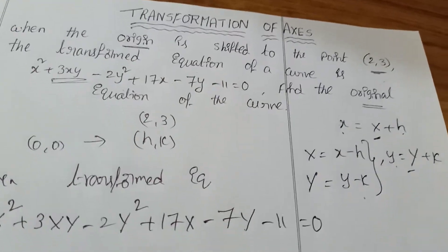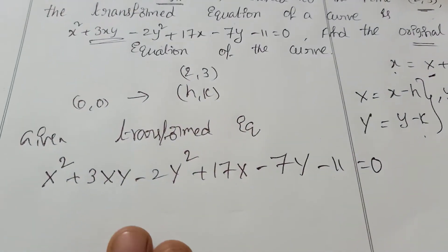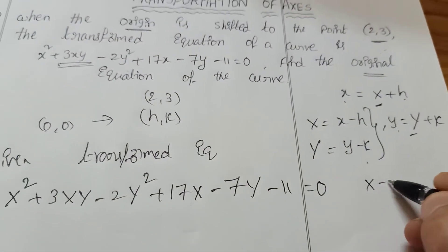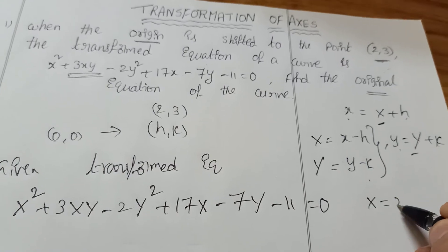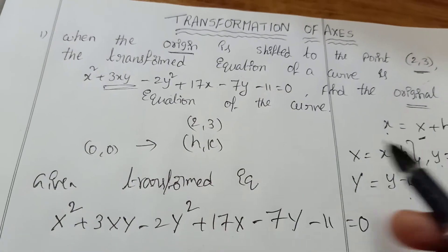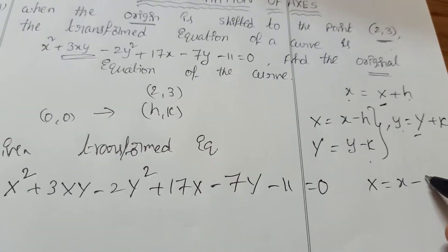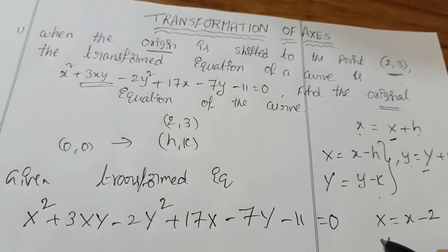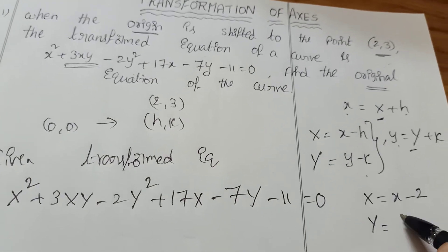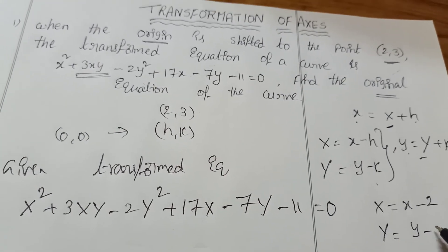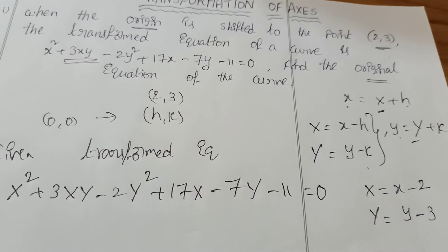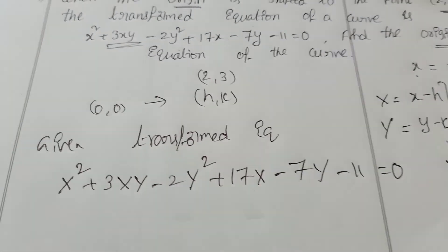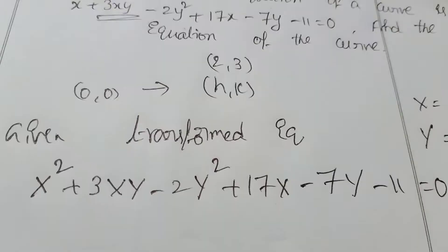Taking these two, we apply them in the equation. Capital X equals X minus 2 (since H is 2), and capital Y equals y minus 3 (since K is 3). Now apply these values in the given transformed equation.